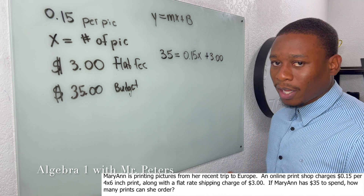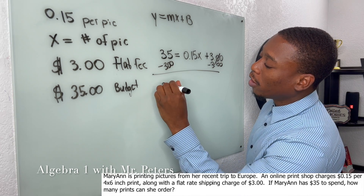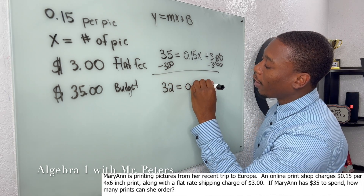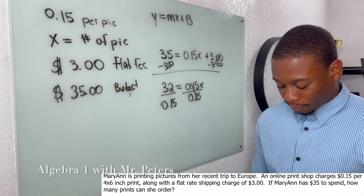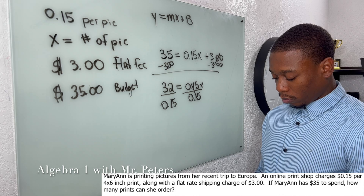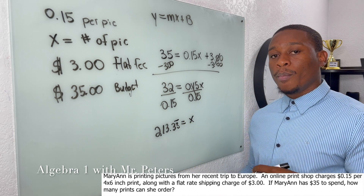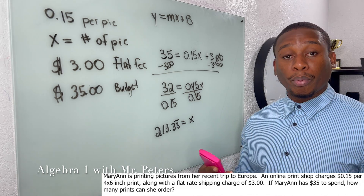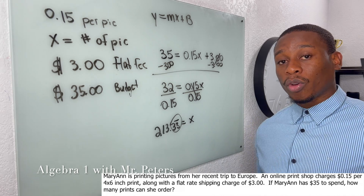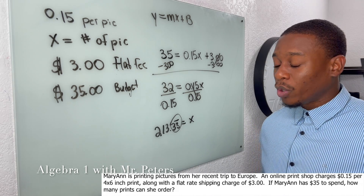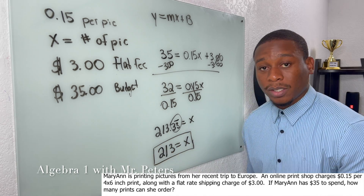Once we make an order we always have to pay that flat fee of three dollars. Now that we have the equation set up, we can solve for x. I subtract three from both sides to get 32 = 0.15x, then divide by 0.15 to get 213.333 — a repeating decimal. Since we can't order 0.33 prints and we don't have enough money for 214, we round down. x = 213 prints for Mary Ann.